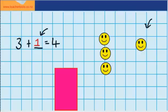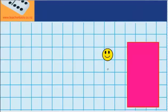Let's try one more question. So, over here I've got one counter. And under this rectangle there are some more counters. Now, in total there are five counters. So, I'm trying to work out how many counters are under this rectangle. So, we can say 1 plus what amount equals 5.